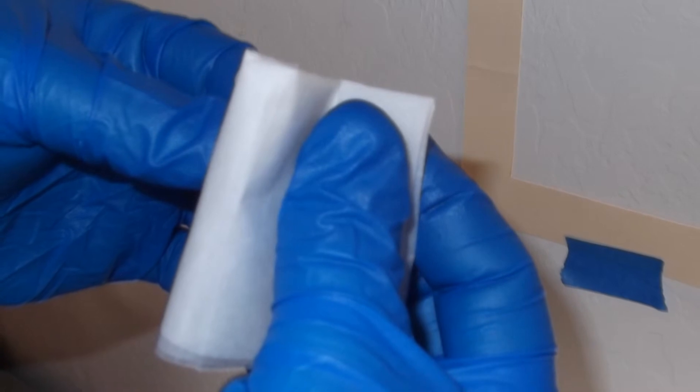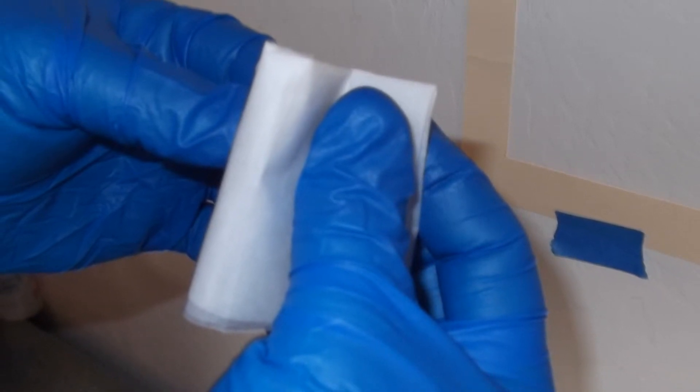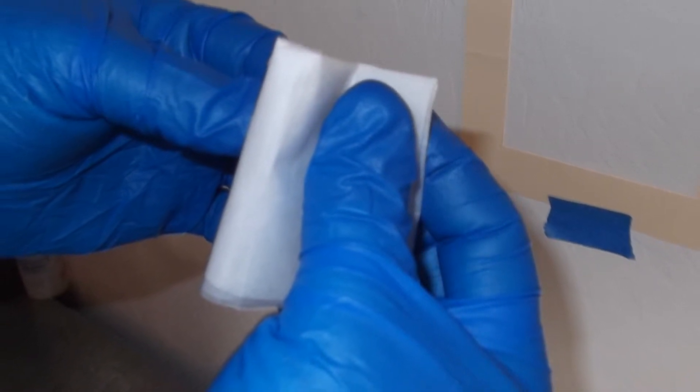Then, without allowing the wipe to touch any other surface, reverse the last fold so that the exposed side is now facing inward.